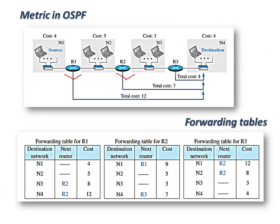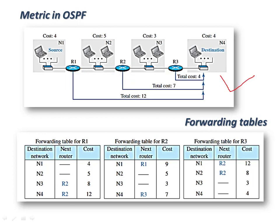Routers in intra-domain networks prepare their forwarding table to guide packets toward the destination. In link state routing algorithm, routers first prepare adjacent neighbor details and network information, then flood that information throughout the network so every router knows the entire topology. Once the system stabilizes, all routers update their forwarding tables. For example, in router 2's forwarding table, the mandatory fields are: destination network address, next router, and total cost.